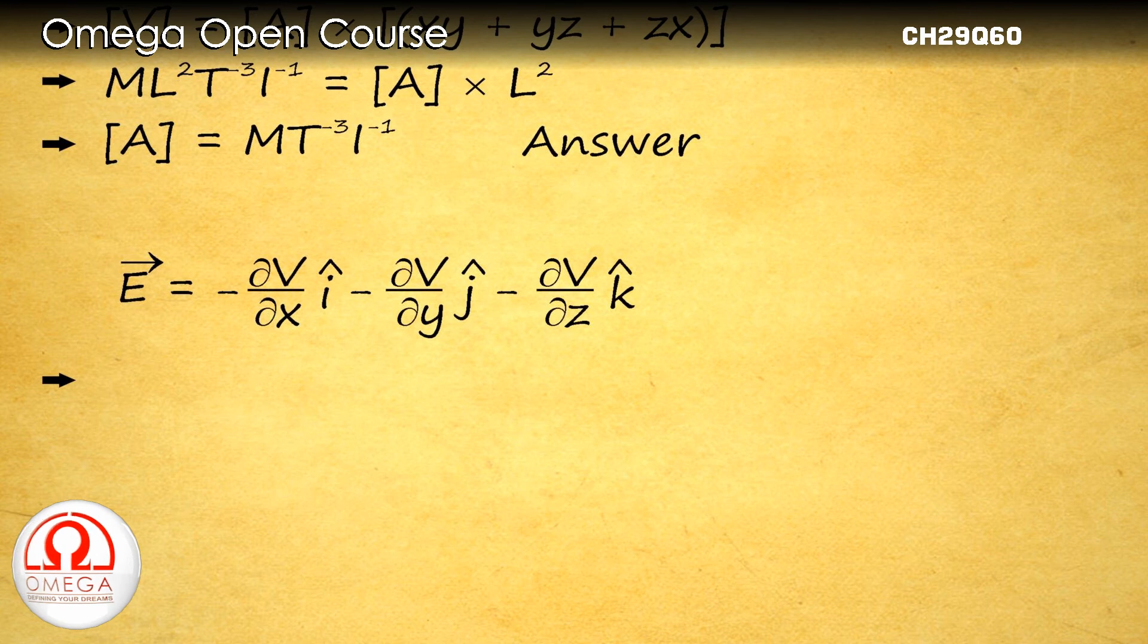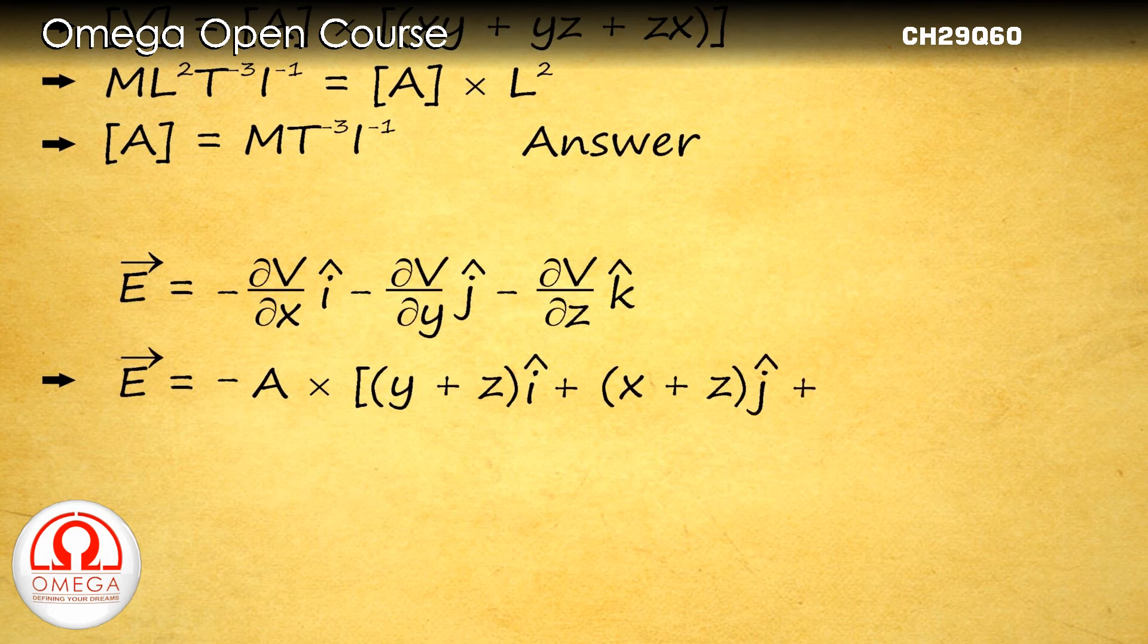Putting the values of derivatives, we get electric field vector equals minus A times [(y plus z) i cap plus (x plus z) j cap plus (y plus x) k cap]. This is the answer for part B of the question.